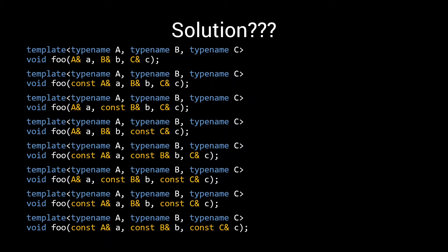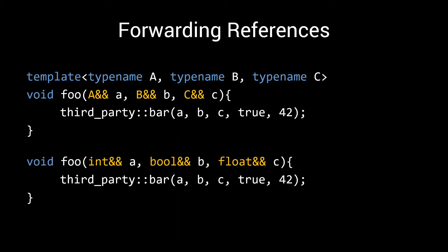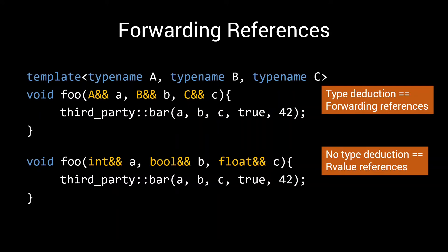Luckily, in C++11, a solution was introduced. So called forwarding references. Just like r-value references, forwarding references use the double ampersand syntax. So what makes this a forwarding reference, while this is an r-value reference? The rule is quite simple. If there's type deduction involved, then the double ampersand denotes a forwarding reference. If there's no type deduction involved, you have an r-value reference.